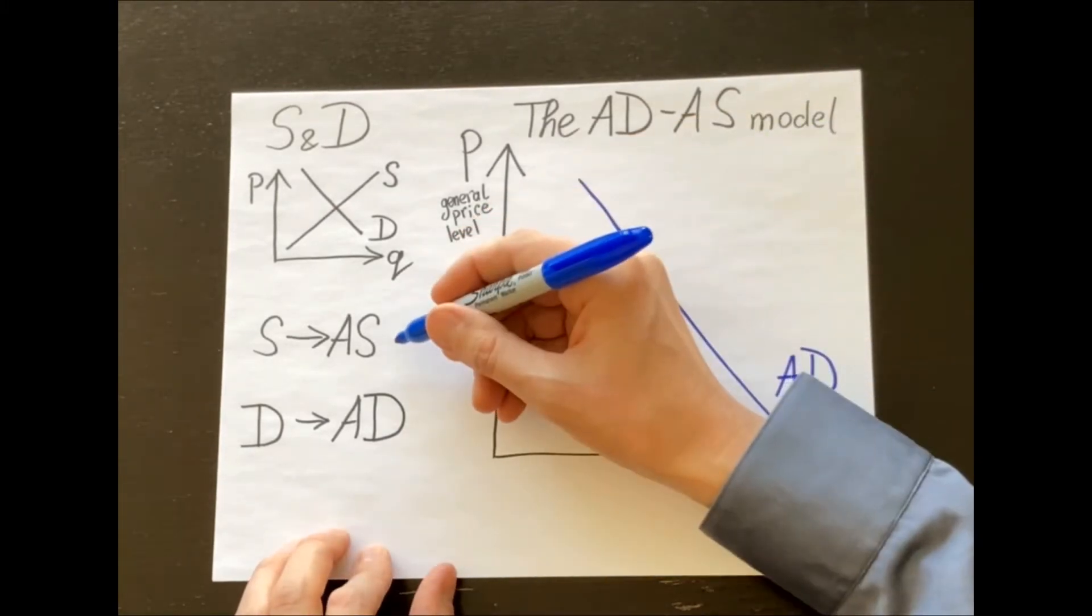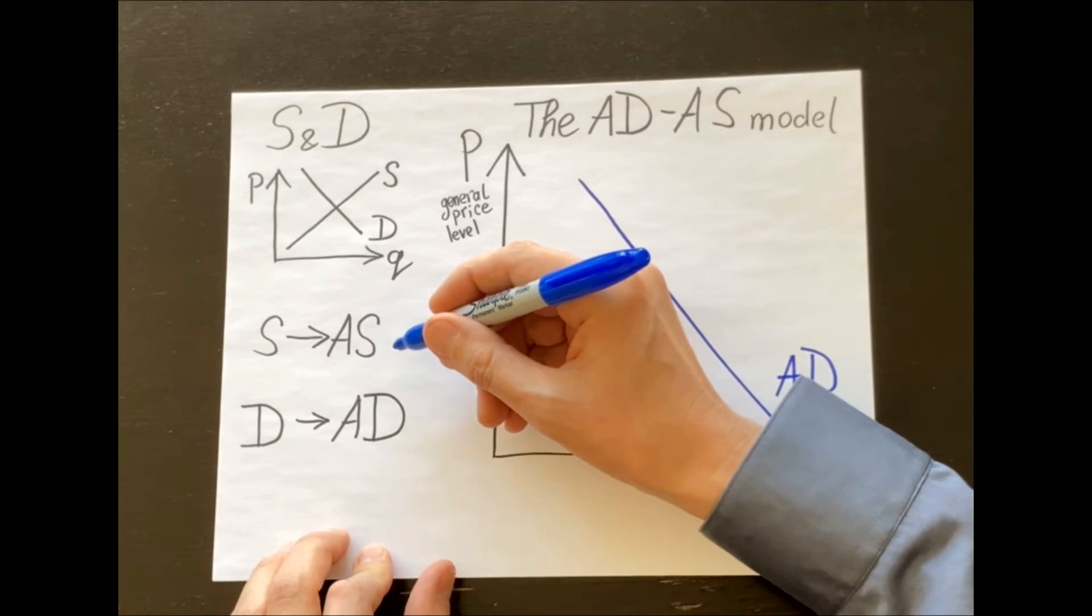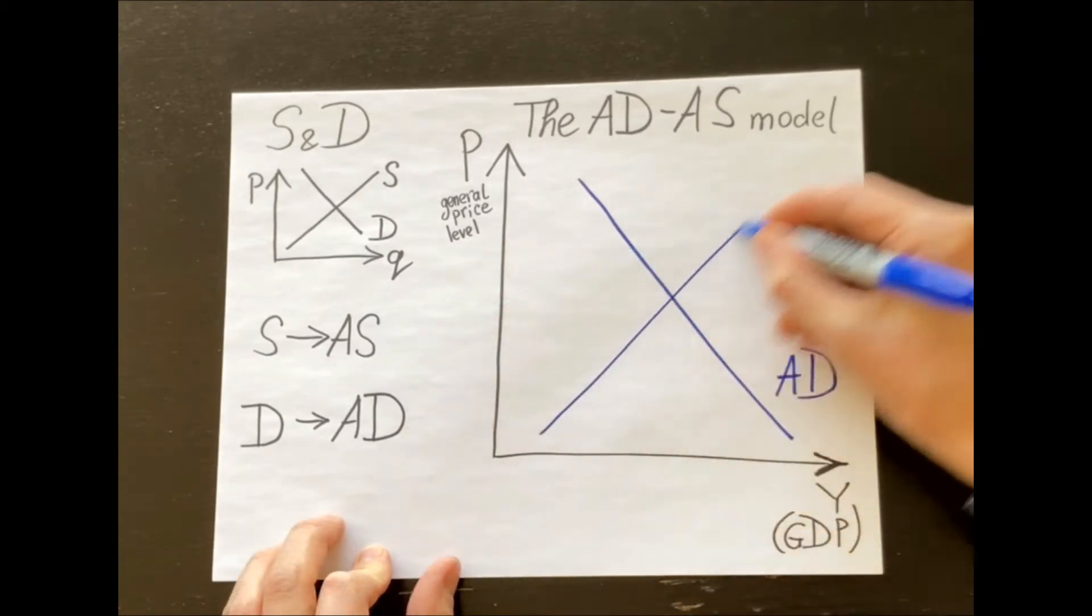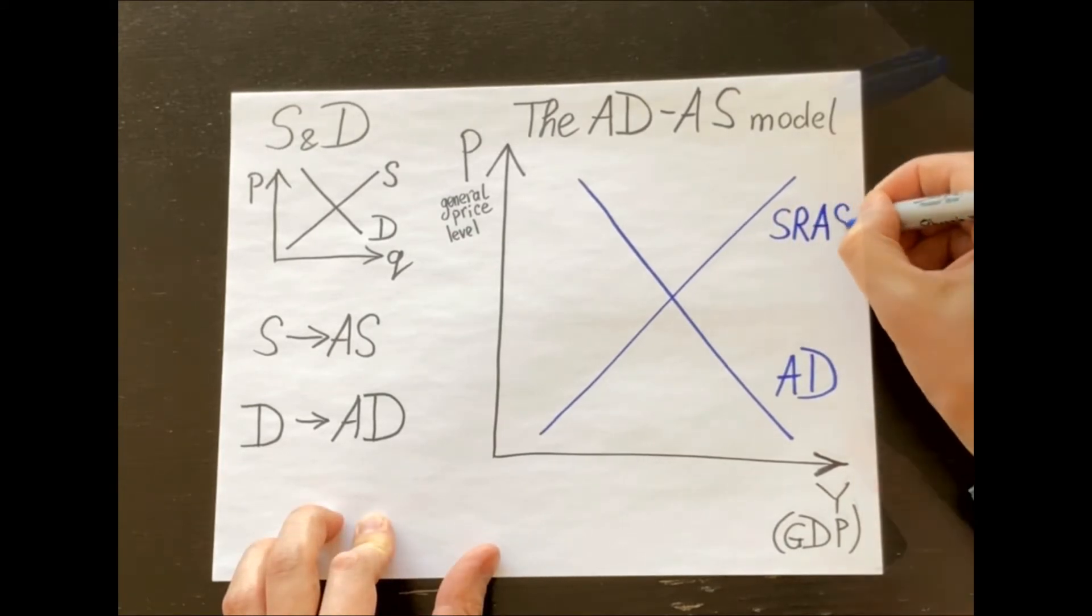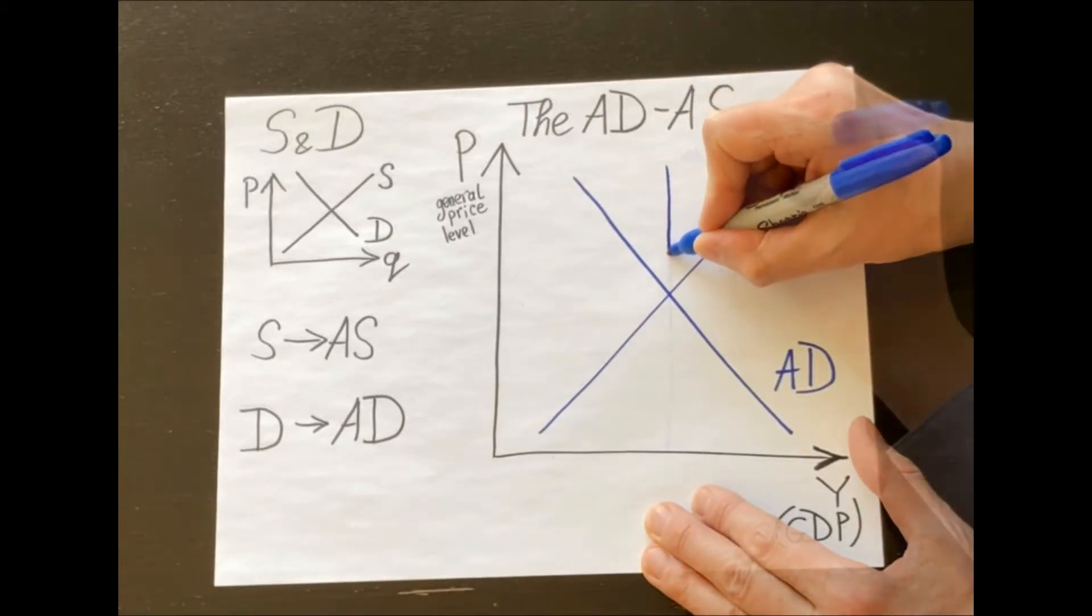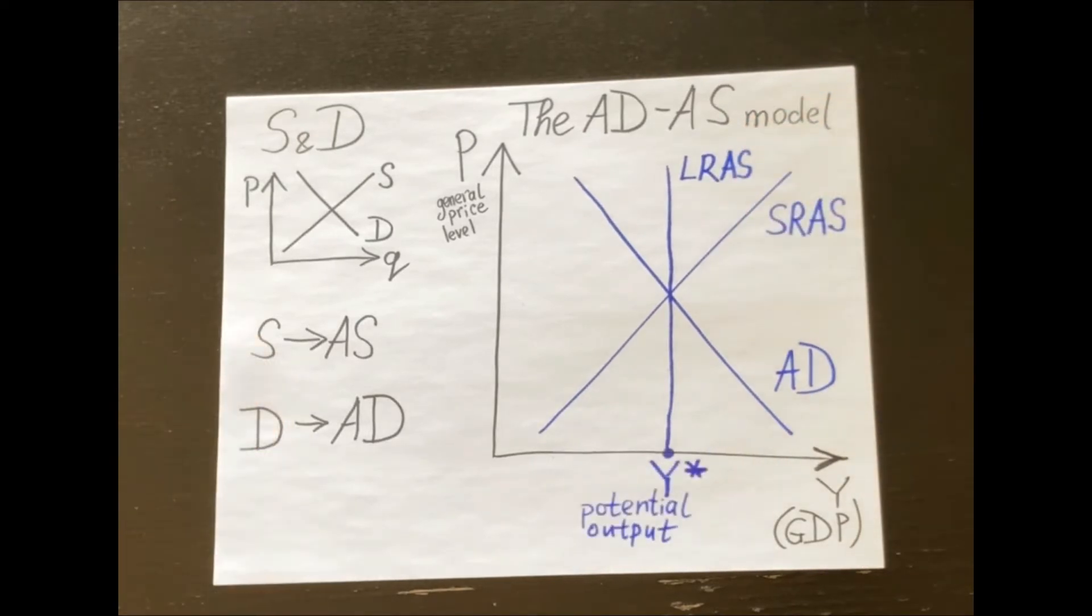Second, aggregate supply. Here we'll have not one, but two aggregate supply curves. The long-run aggregate supply and the short-run aggregate supply. And a short-run aggregate supply looks exactly like a normal supply. It's an upward-sloping curve. And a long-run aggregate supply is a vertical line fixed at potential output.